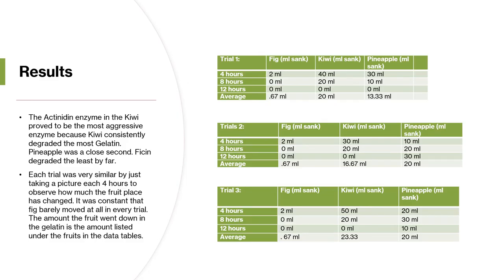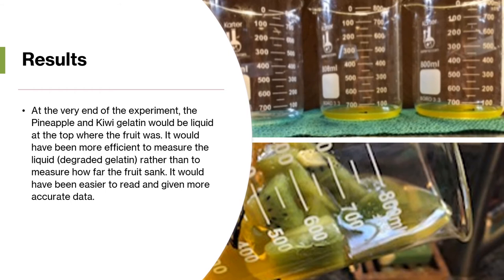My results were very surprising, as I expected bromelain to be the most aggressive enzyme. However, actinidin was the most aggressive and degraded the most gelatin in two of the three trials, making actinidin the most aggressive enzyme. Each trial was observed by taking a picture every four hours to track how much the fruit placement changed. It was consistent that the fig barely moved and actually moved the same amount every trial. At the very end of the experiment, the degraded gelatin was very obvious as liquefied gelatin at the top of the beaker.